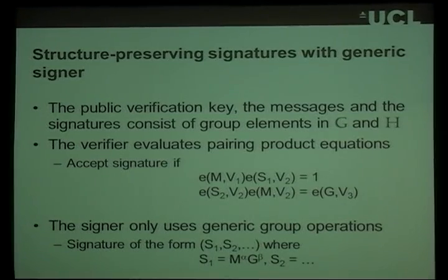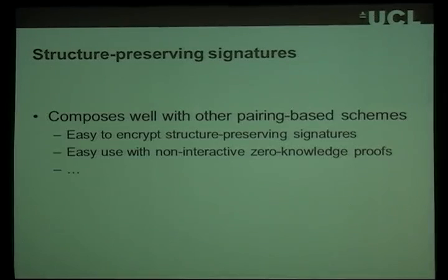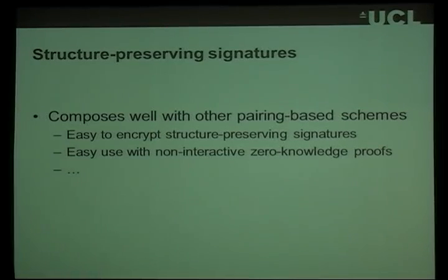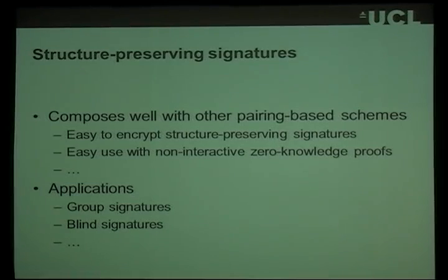The consequence of the signer only using generic group operations is that the signature will be of the form where you take some message element, raise it to some exponents, combined with public key elements raised to exponents. The idea with structure-preserving signatures is that they compose really well with other pairing-based schemes. Because the signatures are all group elements, it is easy to do ElGamal encryption and encrypt these group elements. Because the verification equation is a pairing product equation, it is easy to apply non-interactive zero-knowledge techniques and prove possession of a valid signature without revealing it. Applications include group signatures, blind signatures, and many other protocols.